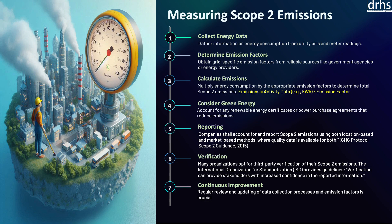In summary, measuring scope 2 emissions involves collecting accurate energy consumption data, determining the appropriate emission factors, calculating emissions, and considering the role of green energy purchases. These steps enable organizations to assess their indirect greenhouse gas emissions and take action to reduce their carbon footprints.